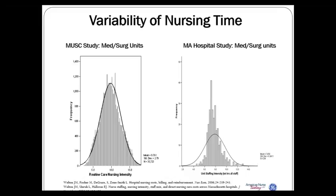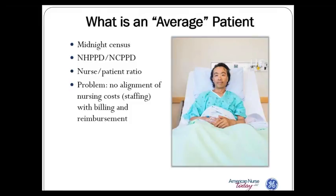That's the importance of understanding what patients need — their acuity and the overall amount of nursing care time for each individual patient. Our typical way of approaching nurse staffing is to look at midnight census, ratios, or nursing hours per patient day. All of these measures are an average of many nurses over many patients, and basically use a single statistic to identify nursing care. So what is an average patient? The tools and measures we're using right now to understand staffing are antiquated. We need better ways to identify the actual need and demand for nursing care, as well as the actual care delivered by each nurse.